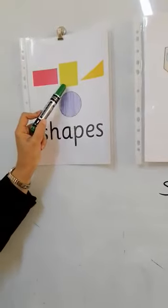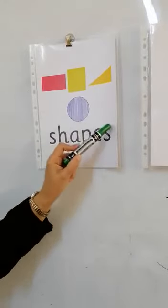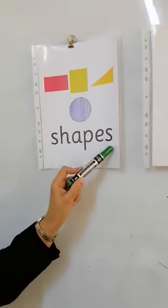Rectangle, square, triangle, circle. These are called shapes.